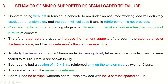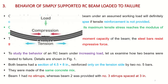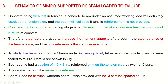The next topic is the behavior of a simply supported RC beam loaded to failure. When a beam is subjected to gravity loading, the top fibers are in compression and the bottom fibers are in tension. There are no stresses at the neutral axis. A concrete beam is weakest in tension.